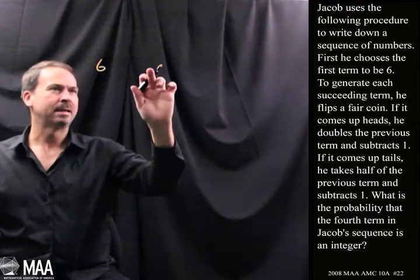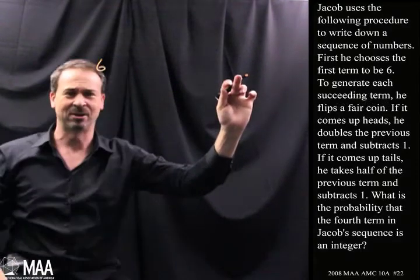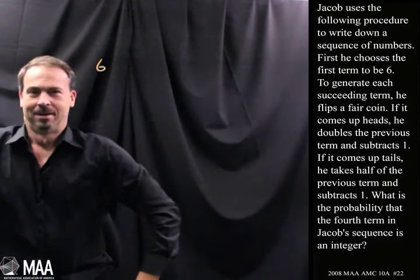And what's the question? What is the probability, the fourth number in a sequence, so the first, second, third, fourth number is an integer?